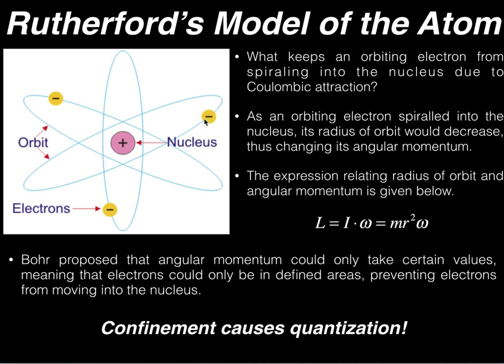In really simplistic terms, the basic understanding is if the angular momentum can only take on certain values, then the radius can only take on certain values.